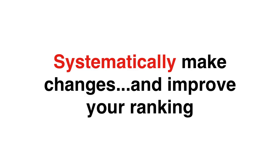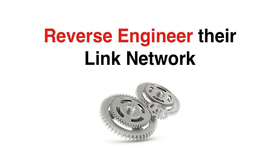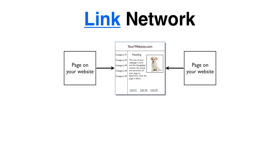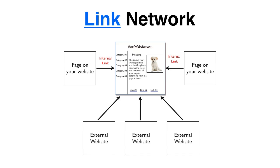The best way to analyse your competition is to reverse engineer their link network and compare it with your own. Every page on the internet has a link network, which is made up of the pages that link or point to that page. These links can come from other pages on your own website, which are called internal links, and from other websites that link to you, which are called external links. Together, these links form a link network that is unique to each page. Now let's take a look at some of the factors that influence the impact of a link network on the authority and ranking of a particular web page.